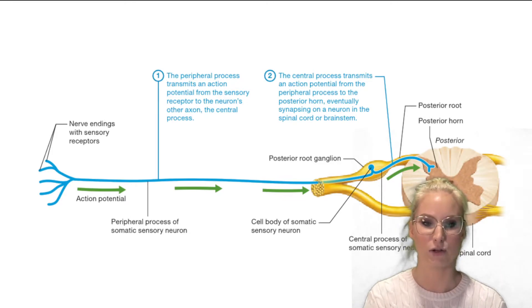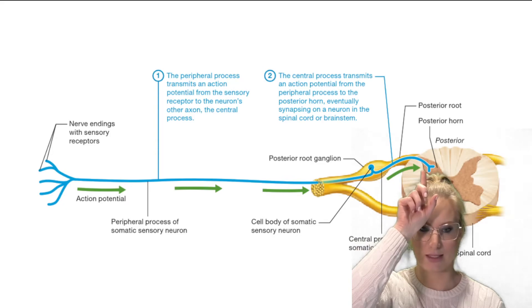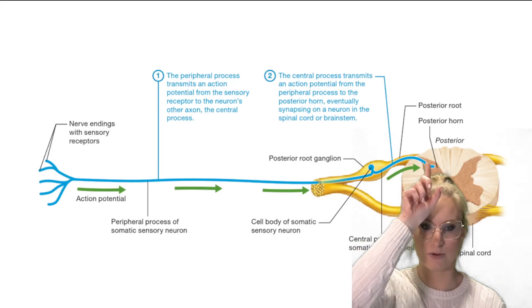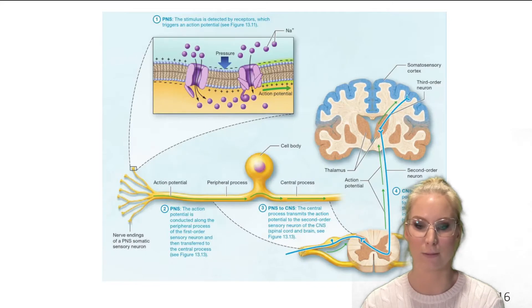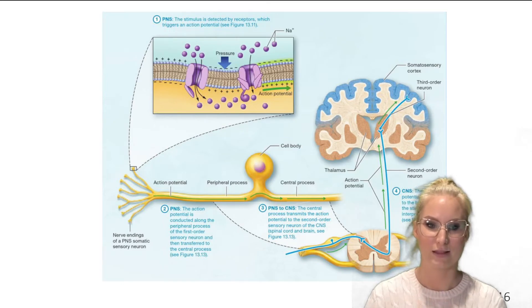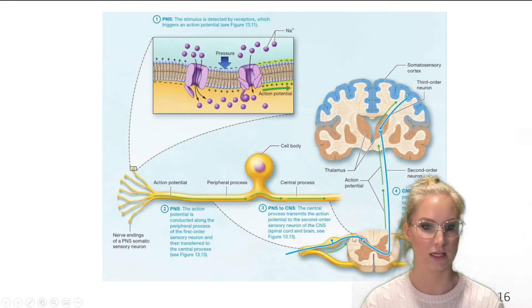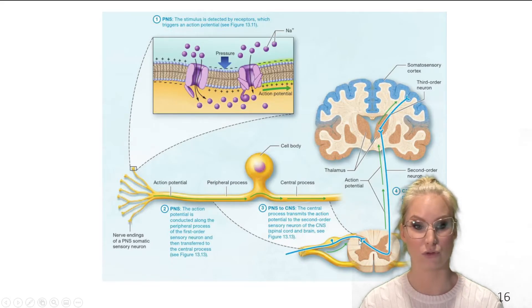So you might notice from this diagram right above me here is that this sensory neuron is terminating in a very specific part of the spinal cord called the posterior horn. So that's where that sensory neuron is going to meet its next contact. It's going to synapse with a second order neuron. So in the spinal cord, that sensory neuron is bringing in stimuli here. So that's that first order neuron and it's synapsing with a second order neuron here in that posterior horn.